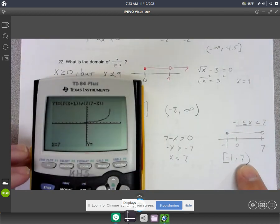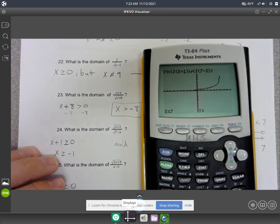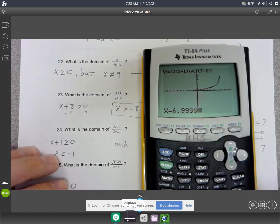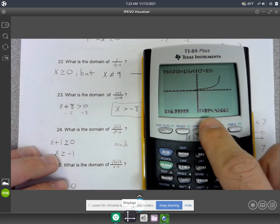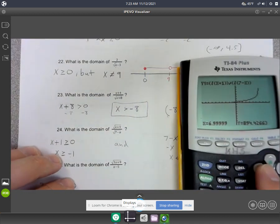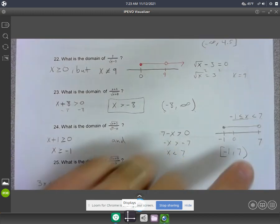All right, 7 is not in the domain. That's why it was an open dot there. But if you plug in 6.95 or something, it does give you a result. 6.99999 gives you an answer, 894. So that's how far to the right the graph goes is 7, but not including 7.